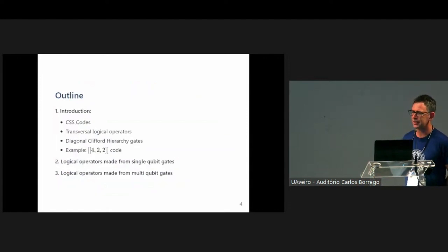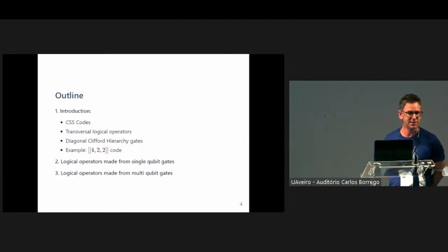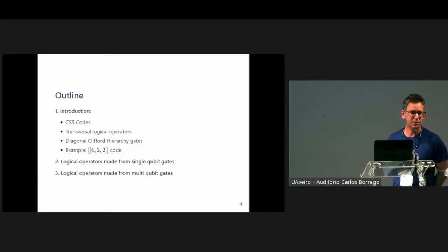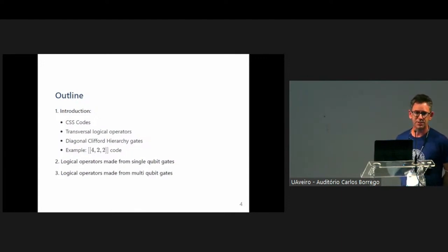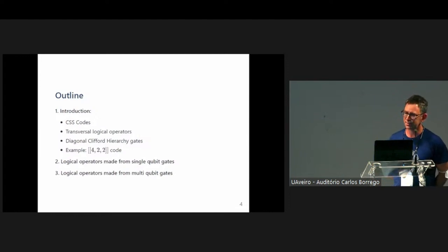The structure of today's talk: I've introduced a lot of concepts without fully defining them, so the intro will get a bit more careful about those definitions — for instance, what's a CSS code, what do I mean by a transversal logical operator, and what do I mean by a diagonal Clifford hierarchy gate? Then I'll use the 422 code as an example, followed by algorithms for logical operators made from single qubit gates, and finally algorithms for logical operators made up of multi-qubit gates.